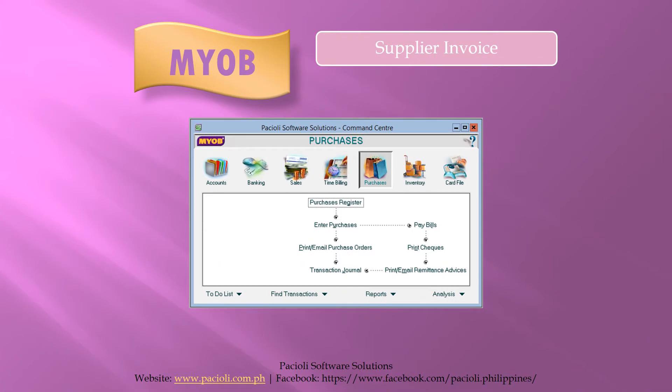To create a purchase order or to enter a supplier's invoice into your MYOB, please start your MYOB. Open your company file and then from the command center, please click Purchases and then click Enter Purchases. A new purchase screen will open.